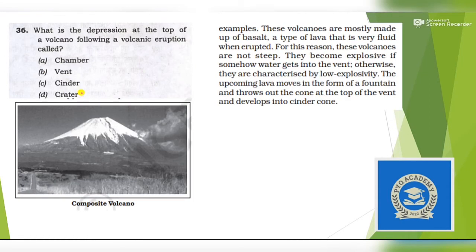Next question: What is the depression at the top of a volcano after a volcanic eruption? Very simple question. You can see this step will be made at the top of a volcano. What is the name of this shape? It will be in a V form and similar to that, its name is vent. It is known as vent. Here you can see they become explosive if somehow the water gets into the vent. When water gets into this opening, this opening is known as vent.